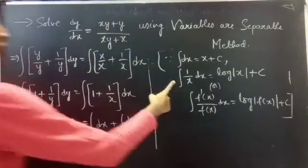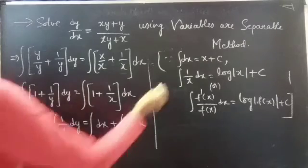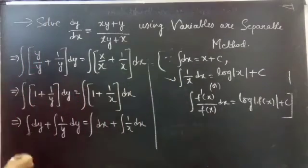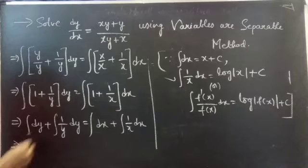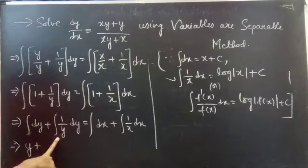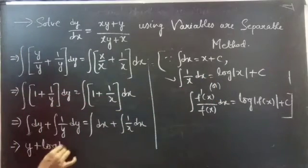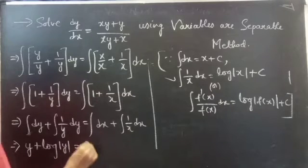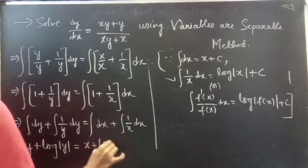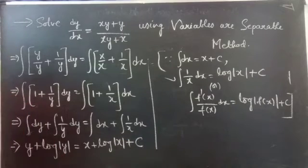You can use any of these two formulas. So you can write this as: integral dy = y, integral 1/y dy = log|y|, and integral dx = x, giving us y + log|y| = x + log|x| + c.